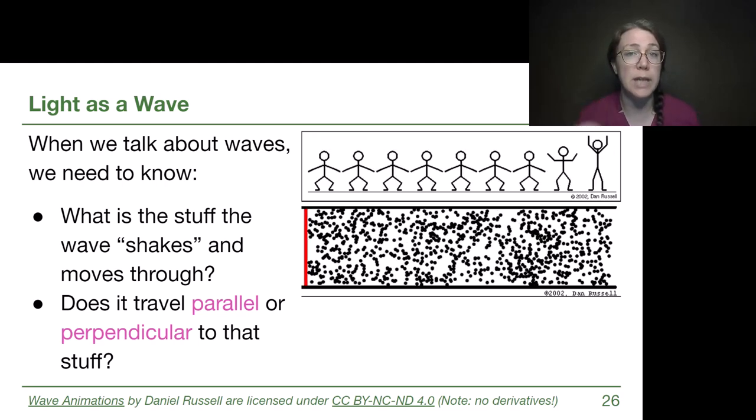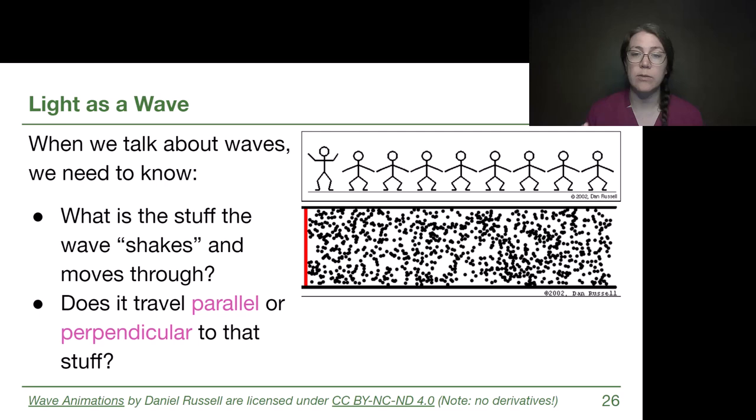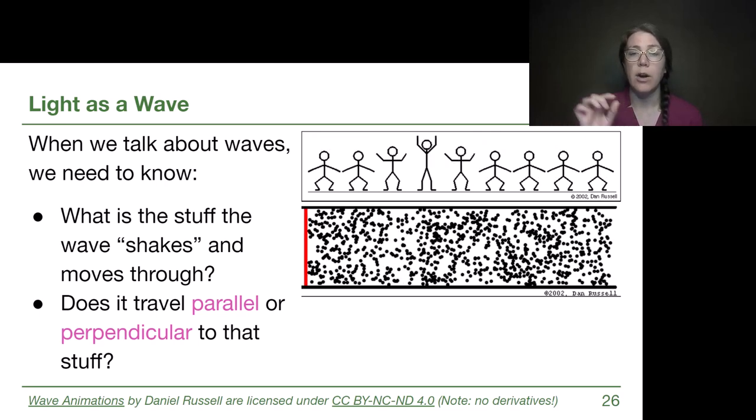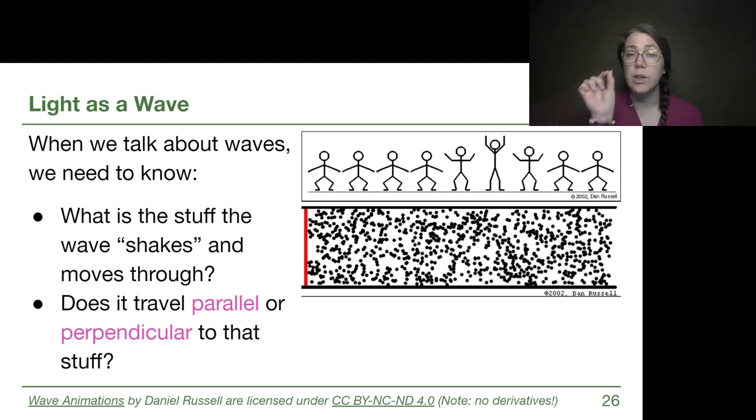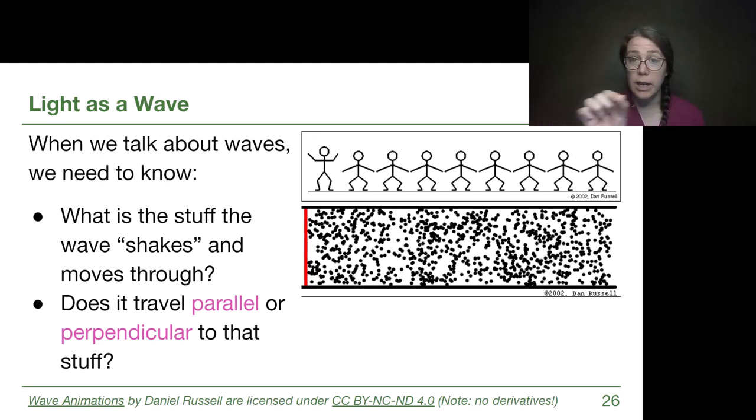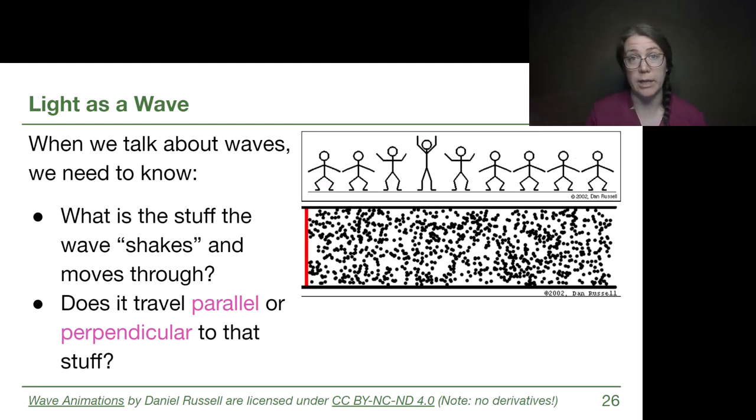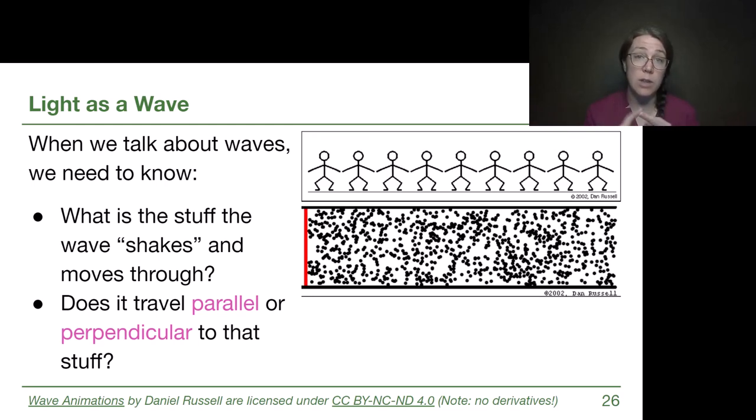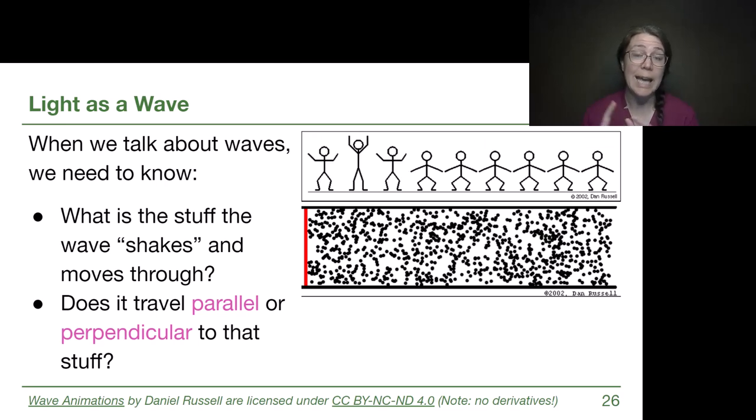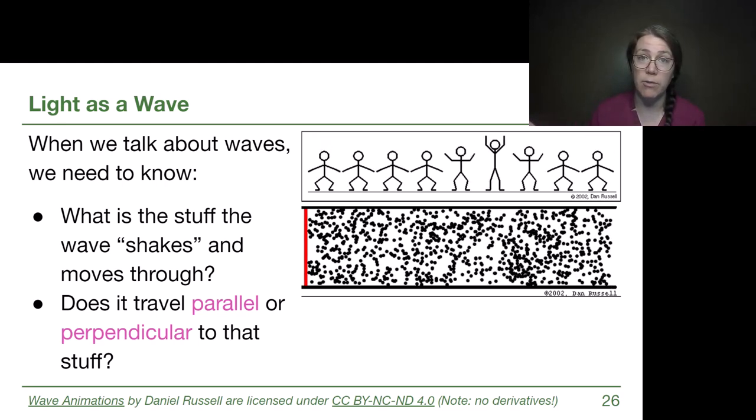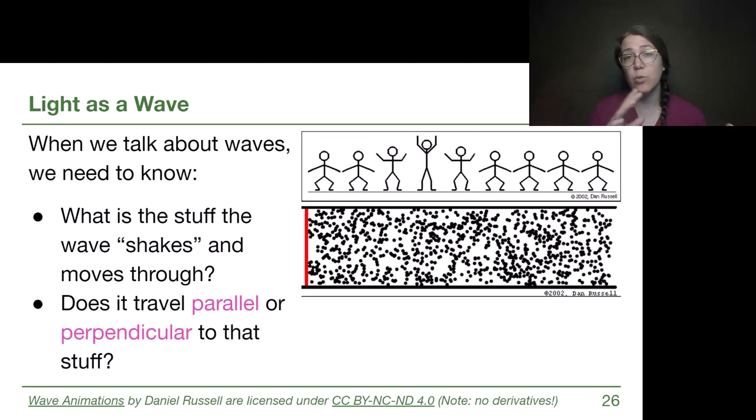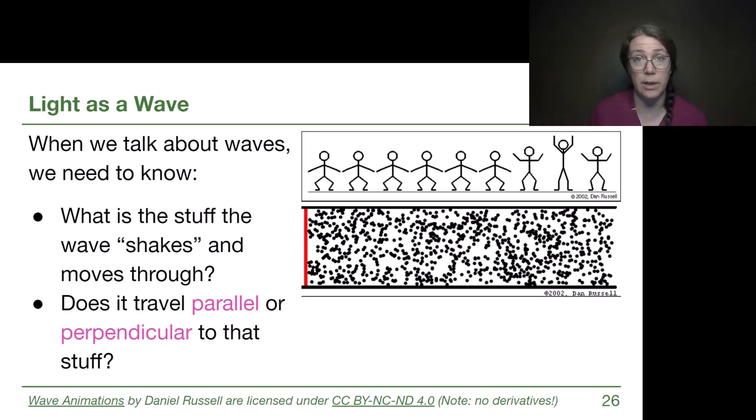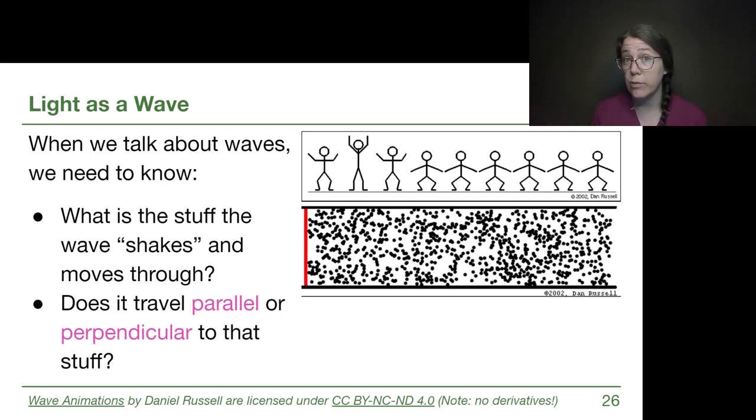That means the wave we're looking at right here travels perpendicular to the material it shakes. The shaking is vertical and the traveling is horizontal, so that's perpendicular. If we think about sound waves, what we're now seeing with all of these little dots are individual atoms or molecules in the air. The molecules are shaking left and right and the wave pattern is moving to the right, which means that the stuff being shaken is the air itself and the pattern is moving parallel to that stuff. If we don't have stuff, there is nothing for us to be able to shake and we can't travel through parallel to stuff we're not shaking. That's why sound can't travel through empty space.